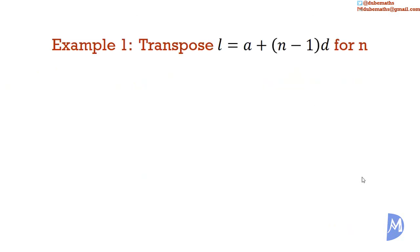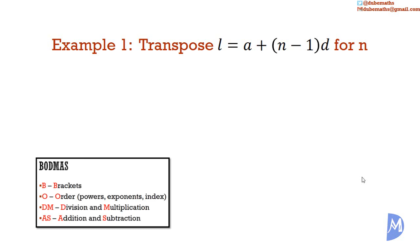Example 1: Transpose L is equal to A plus (N minus 1) multiplied by D, for N. We are asked to make N the subject — that is, arrange the equation so N is alone on one side. N currently has A, a negative 1, and a D with it on the right-hand side. We remove them in reverse order of BODMAS: brackets first, then multiply, then add. So we remove A first, then D, then negative 1.